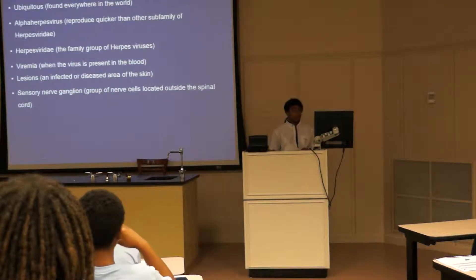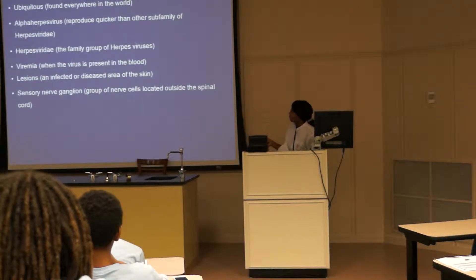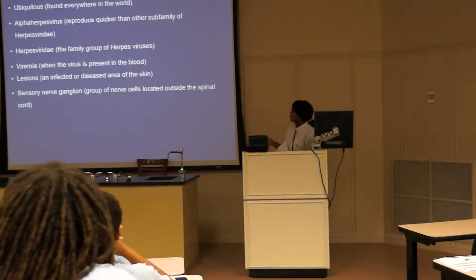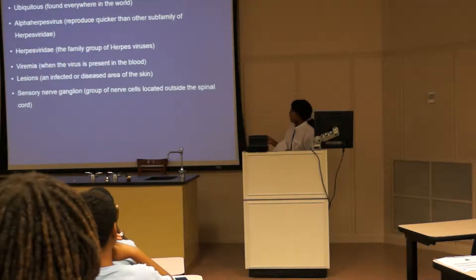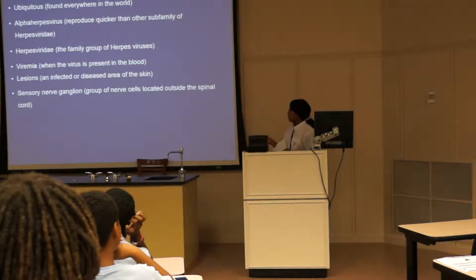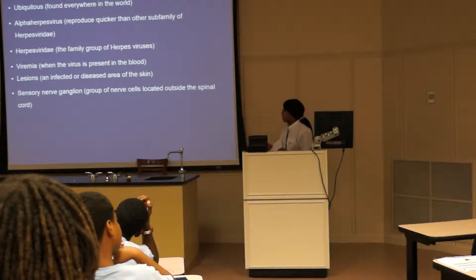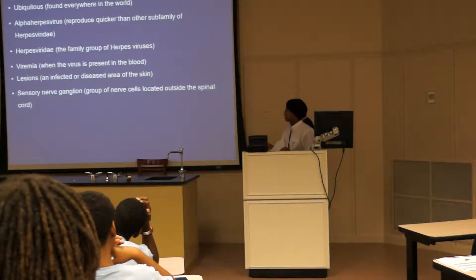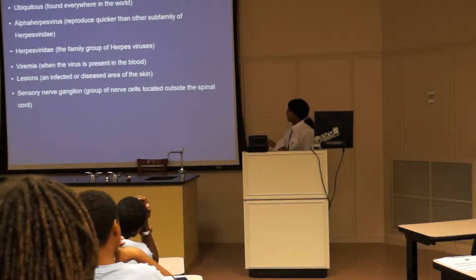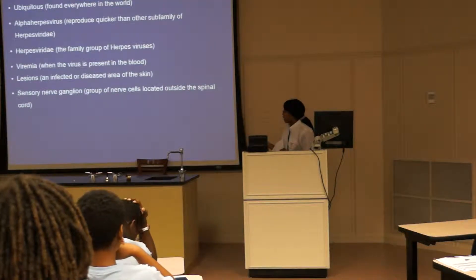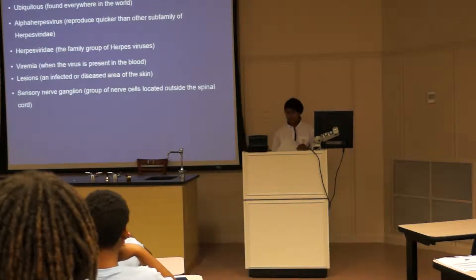Vocabulary. Varicella is found everywhere in the world. Alpha herpes reproduces quicker than other subfamilies of Herpesviridae. Herpesviridae is the family group of herpes viruses. Viremia is when the virus is present in the blood. Lesions are an infected or diseased area of the skin, and the sensory nerve ganglia is a group of nerve cells located outside the skin.